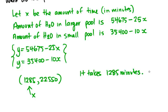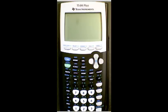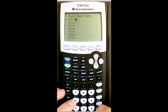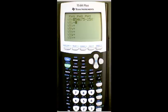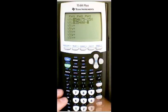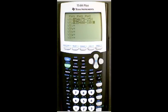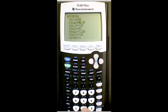Similar to last time, go into y equals, clear out the programs, and put in our functions. One was 54,675 minus 25x, and the other was 35,400 minus 10x. If we hit graph, we need to think about the window settings. How long is this going to take and how much water is in the pool?